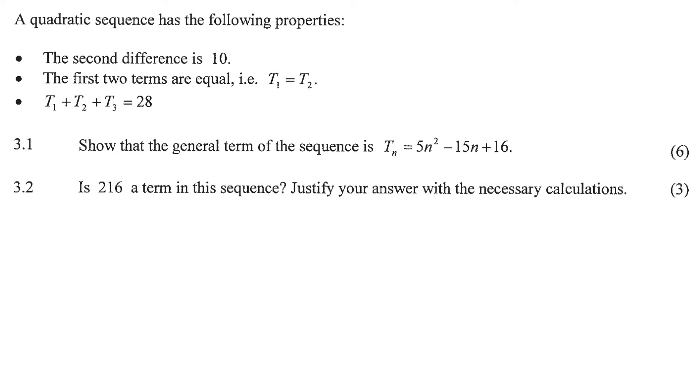A quadratic sequence has the following properties: the second difference is 10, the first two terms are equal, and term one plus term two plus term three is 28.